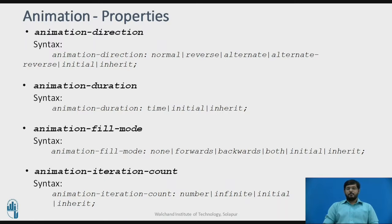Animation-duration takes three types of inputs: time in seconds, initial, or inherit — initial and inherit work the same as in delay. Animation-fill-mode has six values: none keeps the default CSS properties; forwards and backwards change the fill mode in respective directions; both applies fill mode from both sides; initial gives the default value; and inherit inherits any property if defined. Animation-iteration-count can specify a number of iterations, be set to infinite, take the initial default value for a single run, or inherit if defined in keyframe properties.